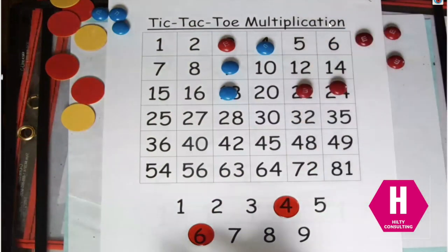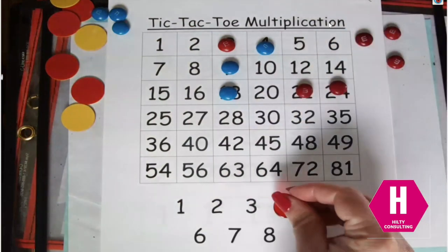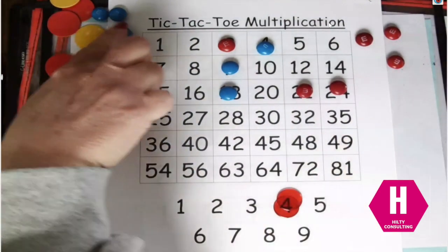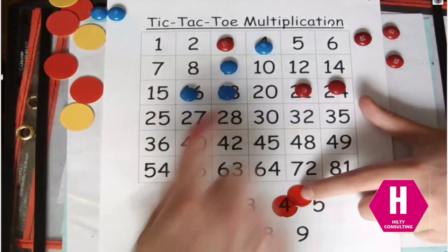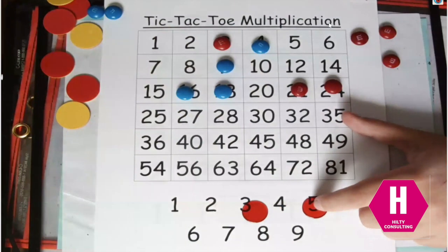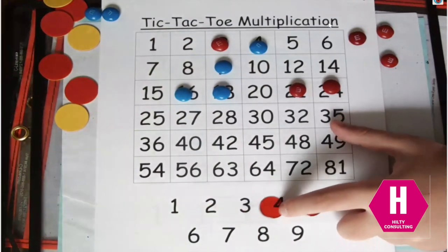Okay, and then I'm going to do four groups of four equals 16 and cover over my 16 and I just got three in a row. Always a little bit stunned by that one. Tic-tac-toe me.